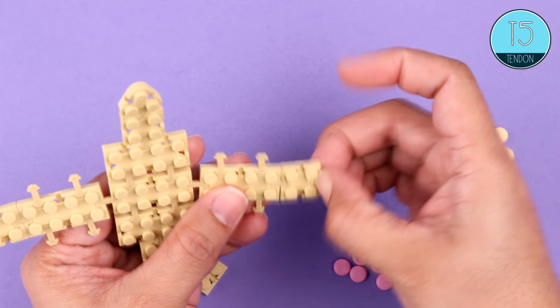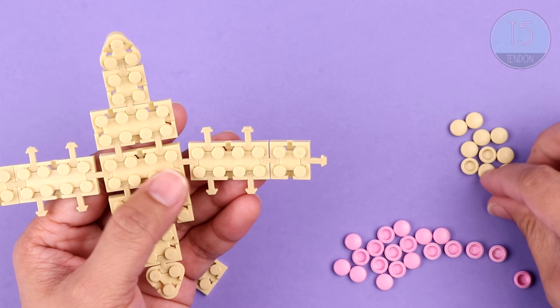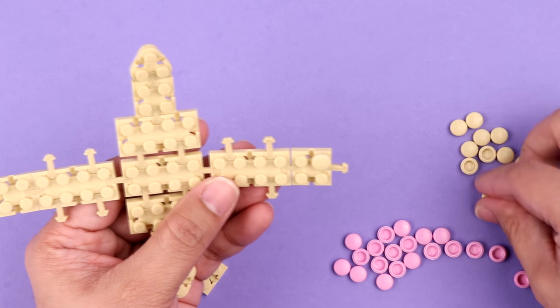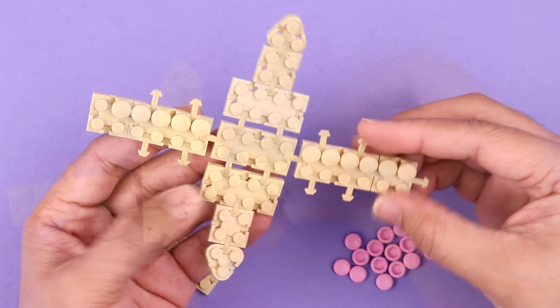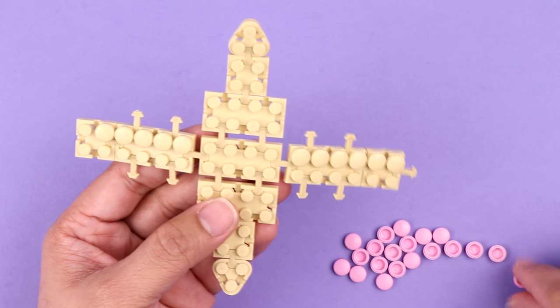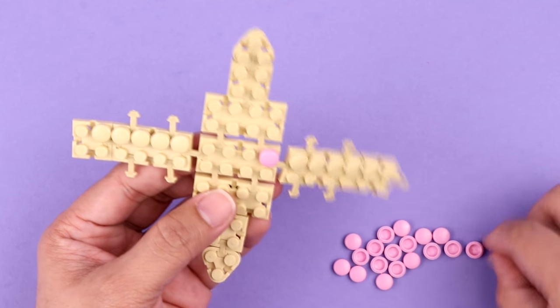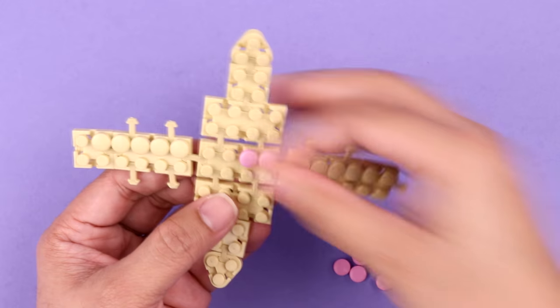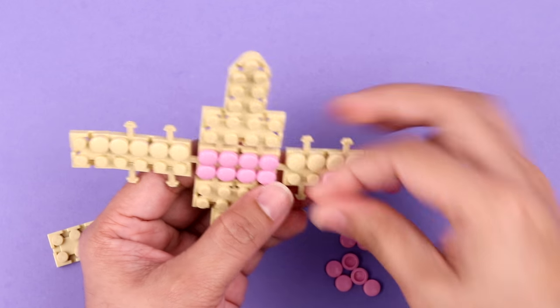One T5 just on one side here, and you'll see why that is shortly. And then we're going to begin doming to lock off those bricks. So here's the pattern that we've used. And note on the left hand side there, we've kept that very far edge of studs completely clear of dome.